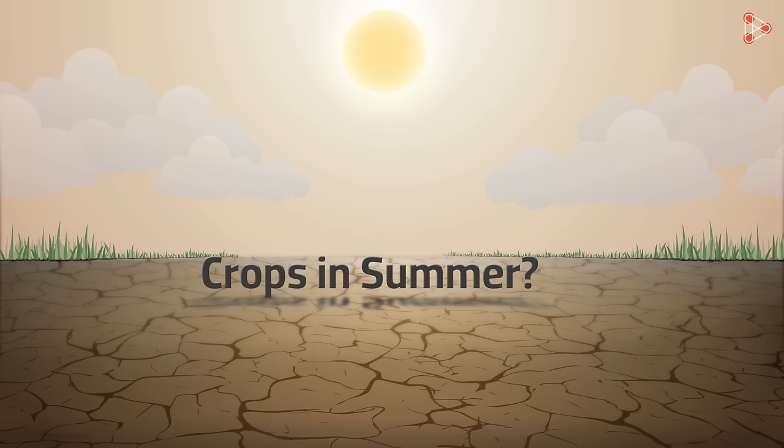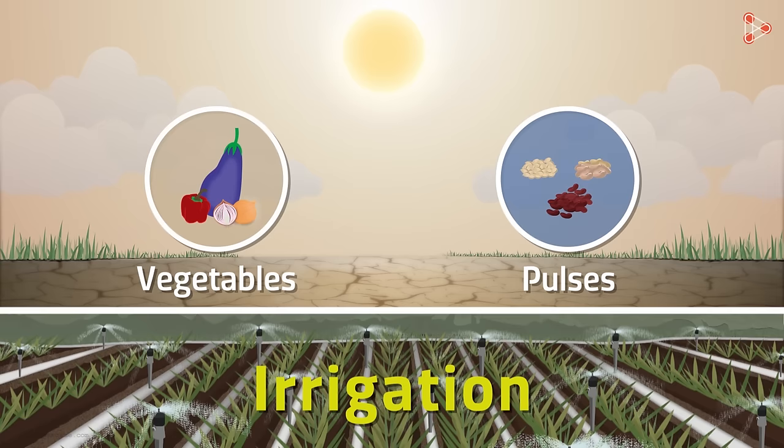What is grown in the summer months then? Well, summer months usually do not see a lot of cultivation. But some vegetables and pulses can be grown in the summer with the help of irrigation.